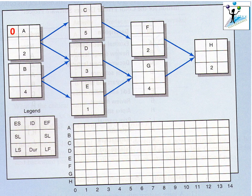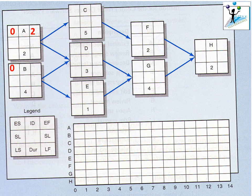You can see the legend — the top left box shows the early start time, which is zero for Activity A. If the activity starts at day zero and has a total duration of two weeks, it should be finished by week two. Activity B has no preceding activity, so it also starts at day zero and has a duration of four weeks, giving an early finish time of four.